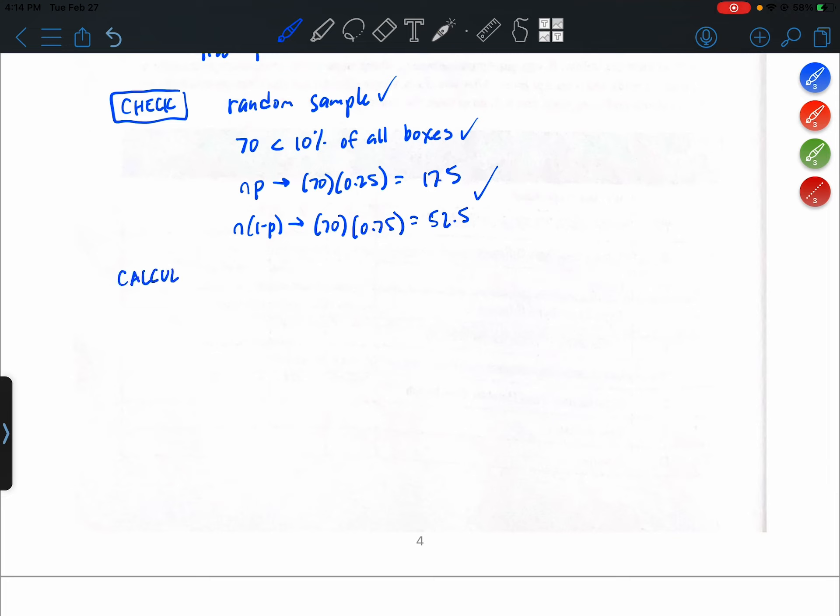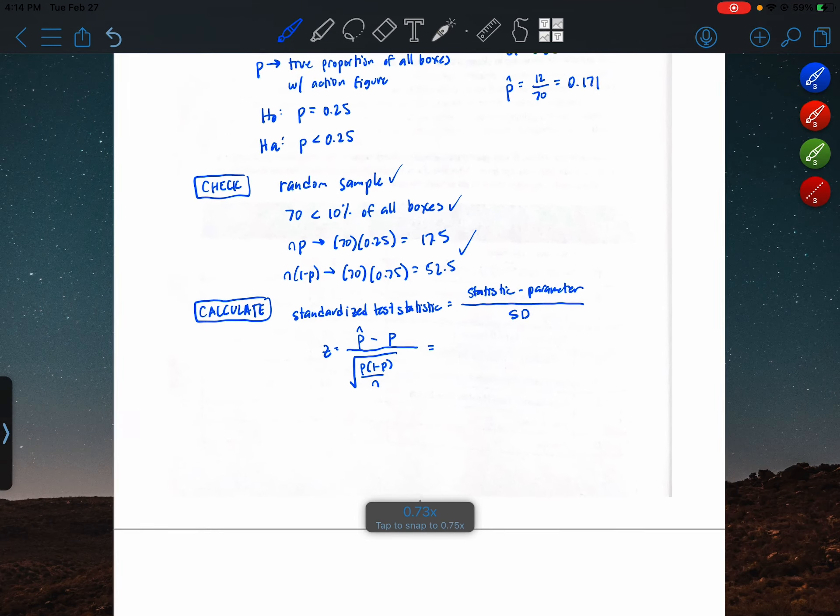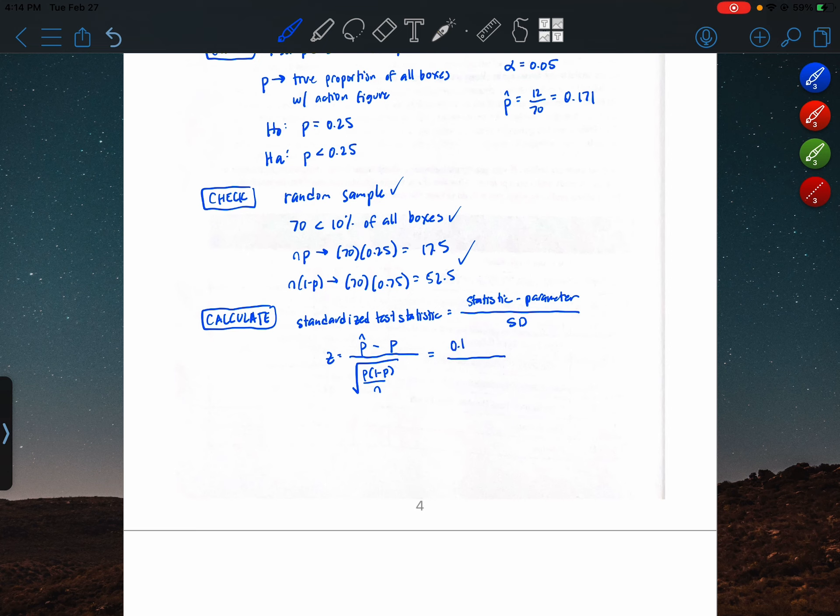Speaking of calculations, that's the next step. So we begin with the general formula. We're going to be calculating a standardized test statistic, which is defined as a statistic minus a parameter divided by an SD. The specific formula for this procedure is to use p hat as the statistic, p as the parameter, and then the square root of p times 1 minus p over n as the SD. So our statistic was approximately 0.171. The parameter was 0.25 and then our SD will be 0.25 times 0.75 all over 70 in a square root.